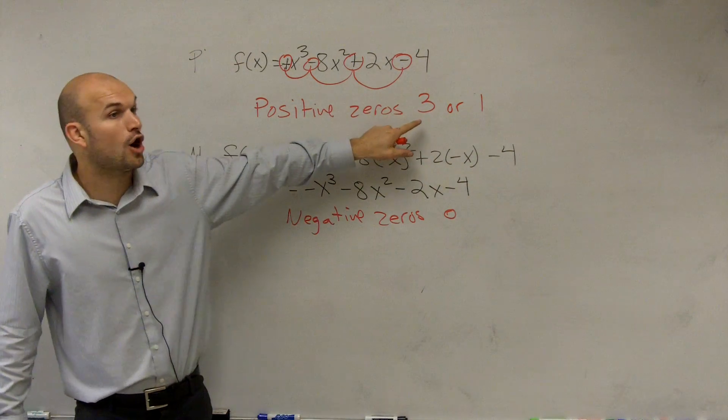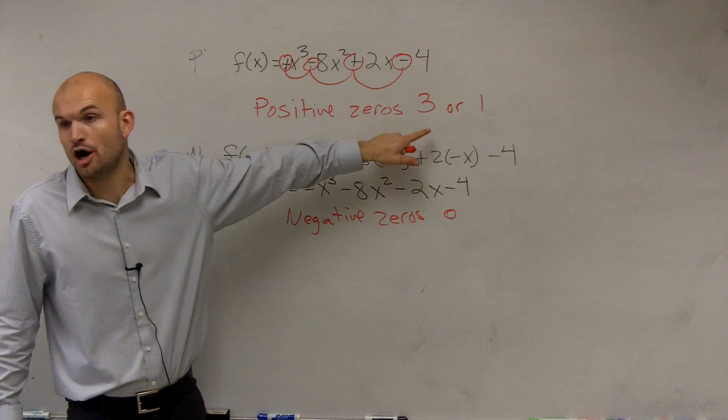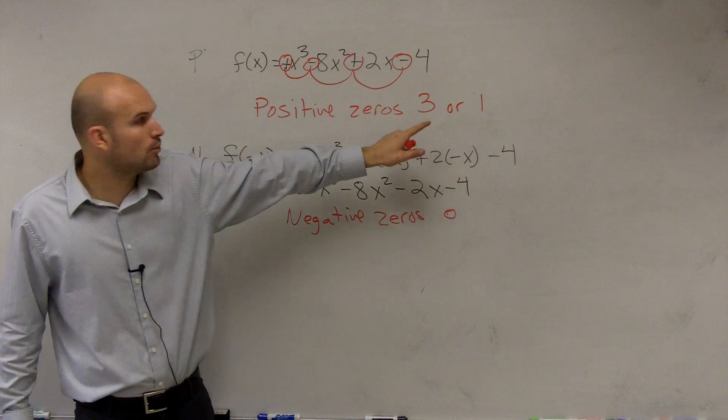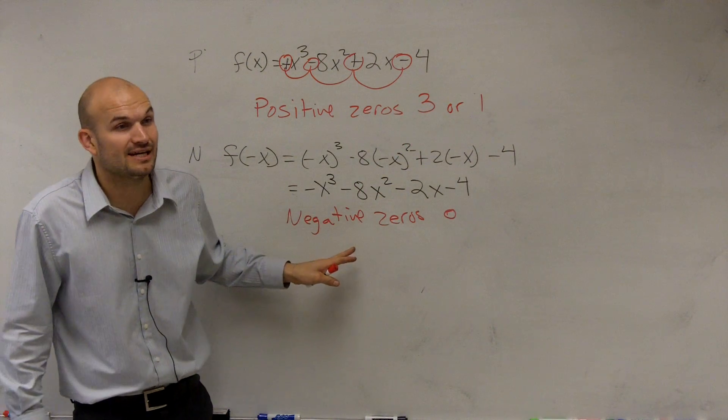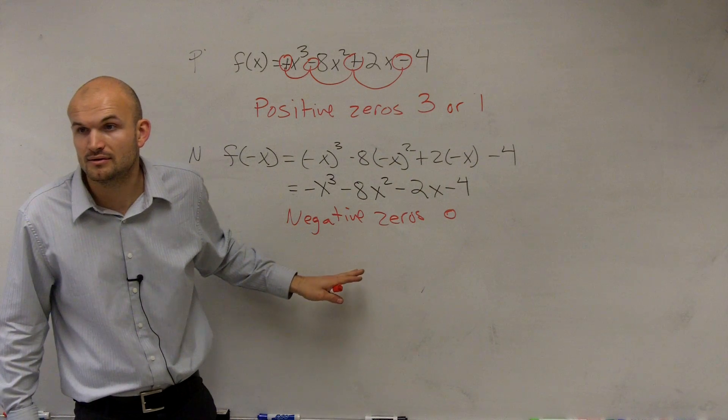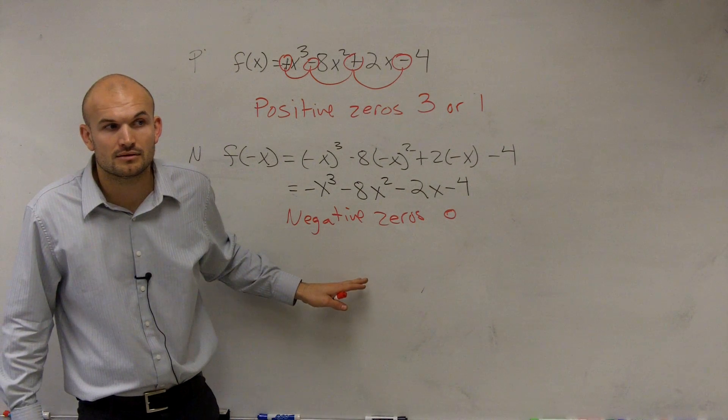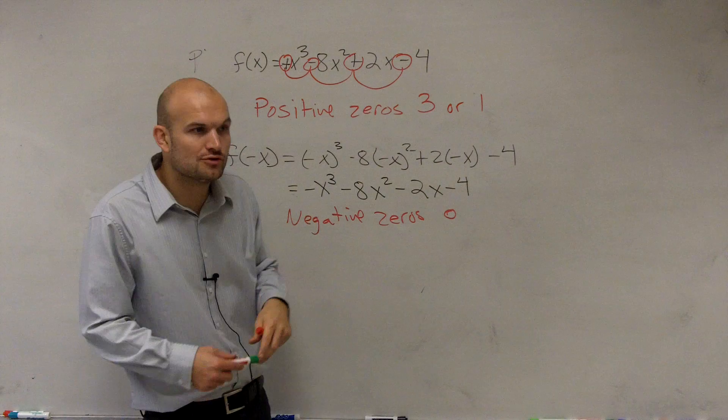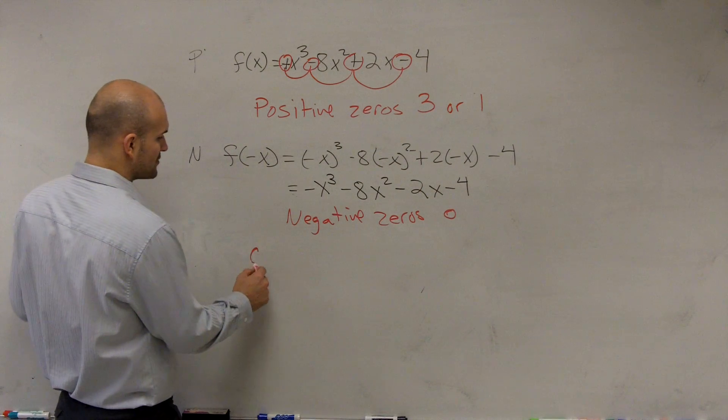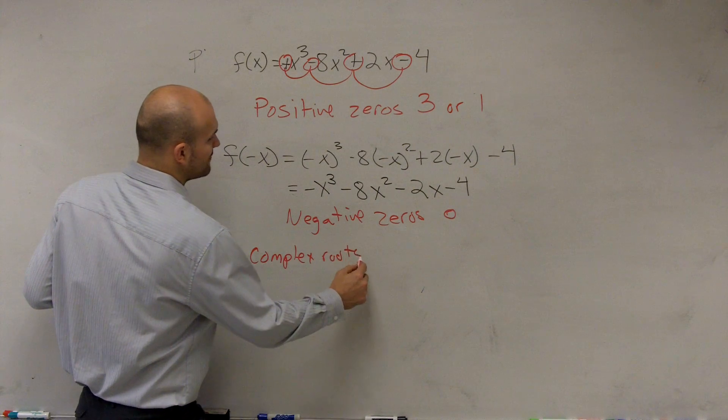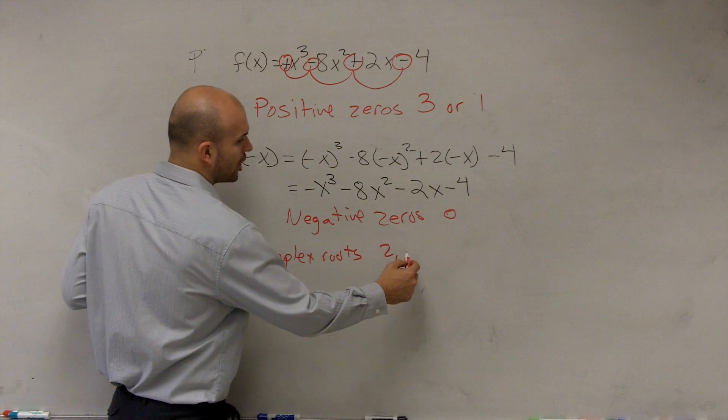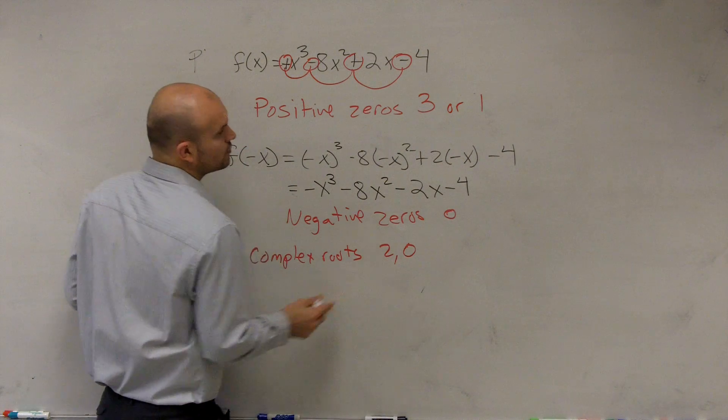So if we notice, we could have all three possible zeros, it could all be all positive, right? Or what if only one was positive? What do my other two zeros have to be? They can't be negative, so what's the other solution? Well, you have to have two more, so you could have two more complex roots. So for your complex roots, you could have 2 or 0.